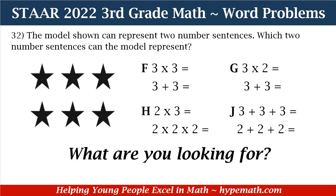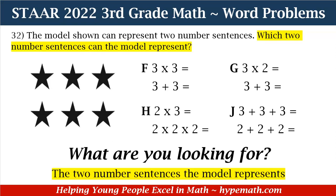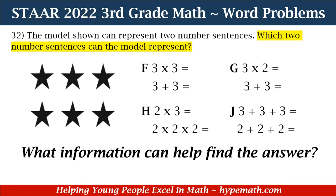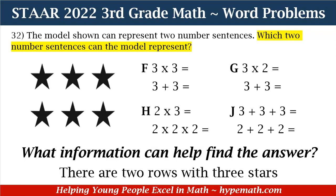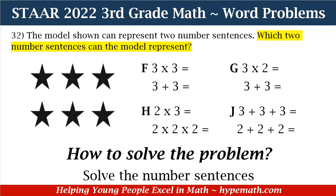The first question we need to ask ourselves is: what are we looking for? We are looking for the two number sentences that the model represents. Our model has three columns, and in each column there are two stars — or we have two rows with three stars each. Now that we have that information, let's solve the number sentences in our answer choices to see if they correctly represent our model.